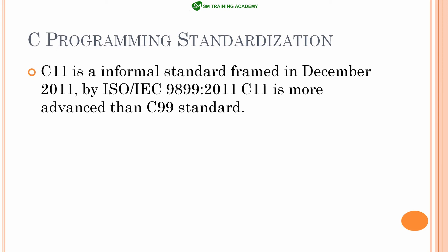The C11 standard is more advanced than the C99 standard. Among all these standards, several bug fixes and all the other unnecessary things available in the programming language were avoided. And all these standards are backward compatible — that means a program written in C11 standard will not be compiled in a C99-based compiler, but a program written in C99 standard will compile in a C11 compiler.